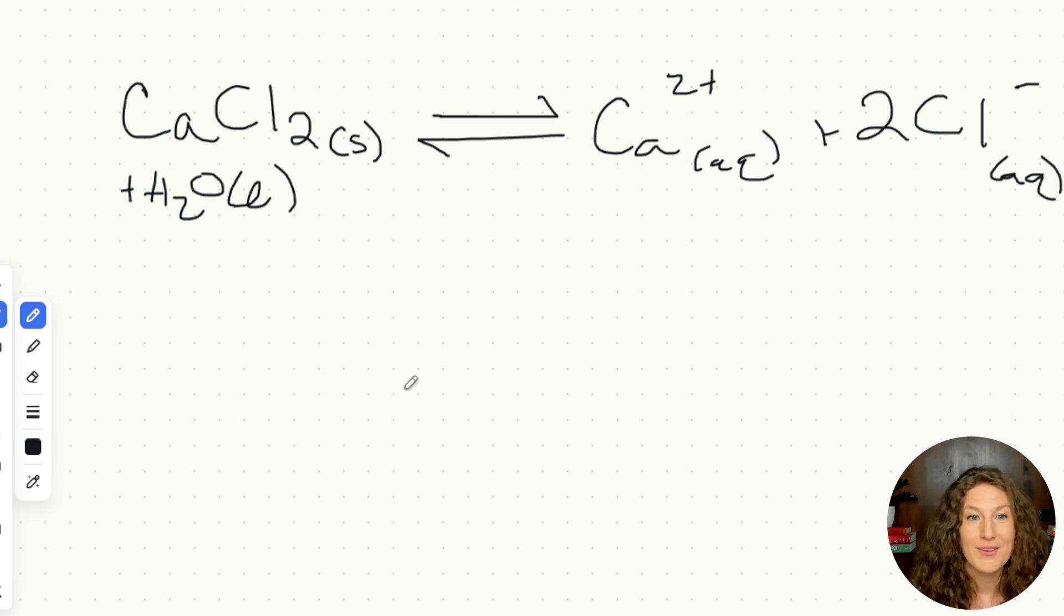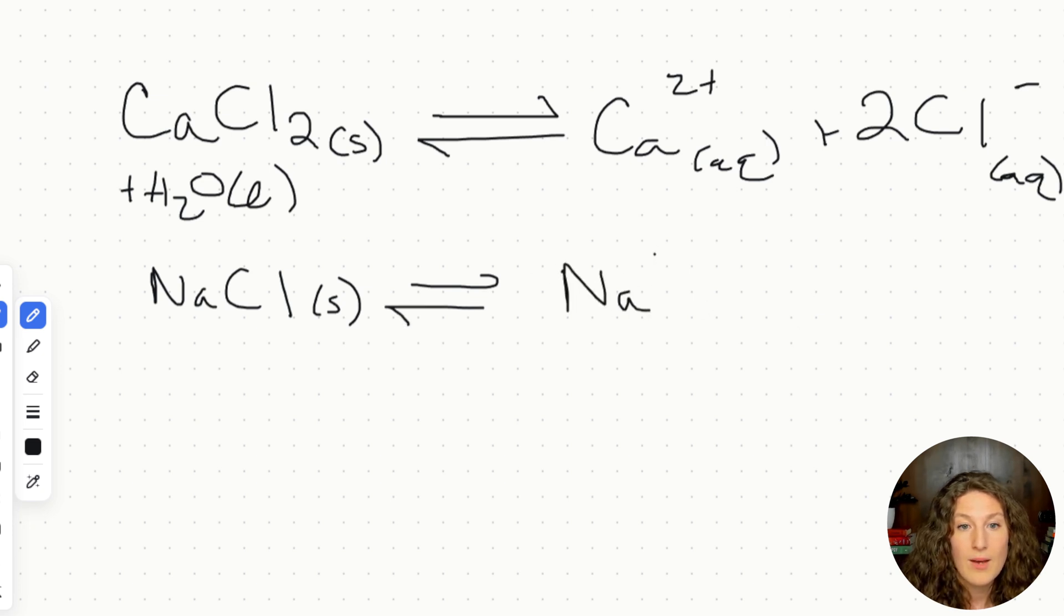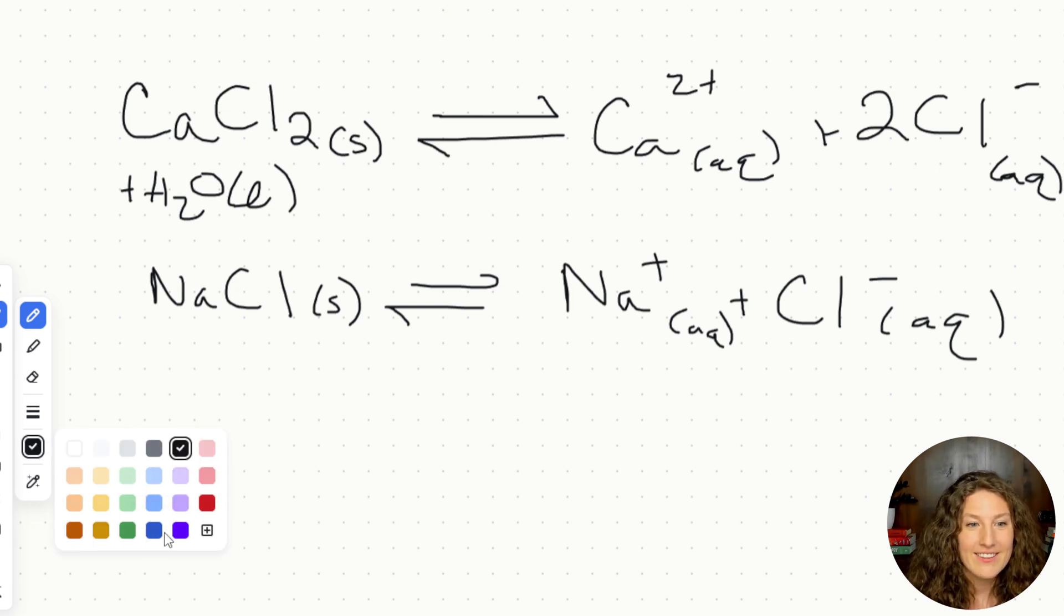Awesome, so here we have our dissolution reaction. This is our base reaction, and usually what they would say on an MCAT style question is that we have a saturated solution of calcium chloride, that's going to be our starting solution. And then they might say, hey, we're going to add in NaCl, sodium chloride. So NaCl, again, we'll draw it out, starts as a solid, and then it's going to ionize into one sodium ion and one chloride ion, again, both an aqueous solution here. Now we have these two ionic reactions in solution together, and I want you to look for, is there a common ion? Are there products that are the same? And sure enough, we have chloride ion and chloride ion.